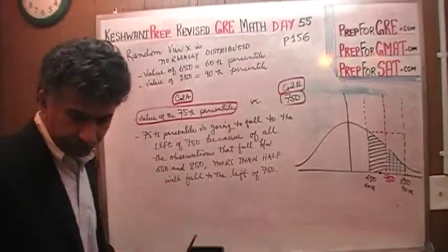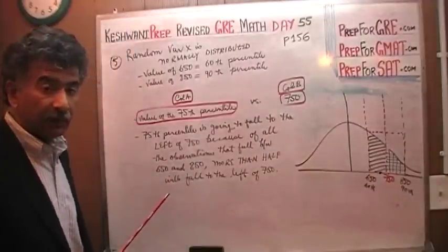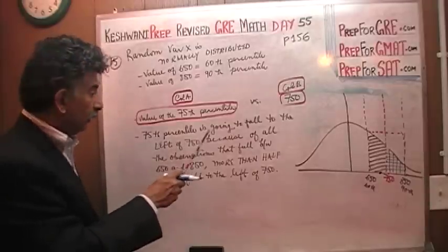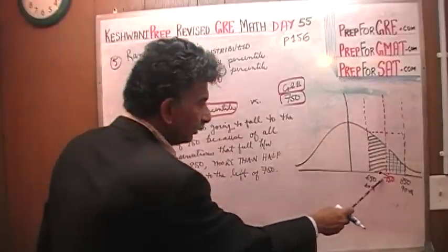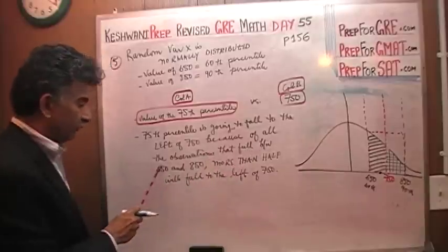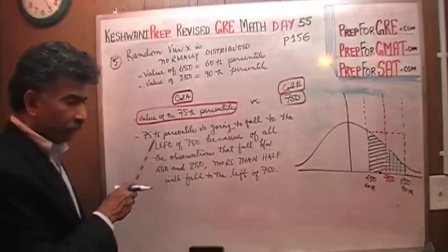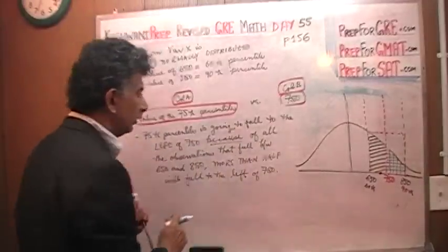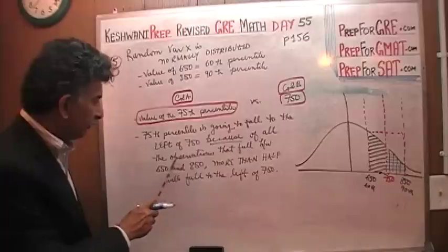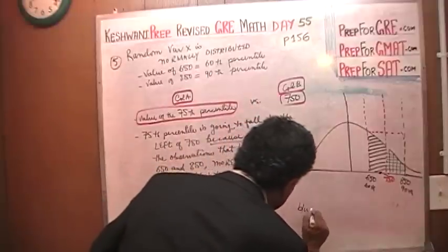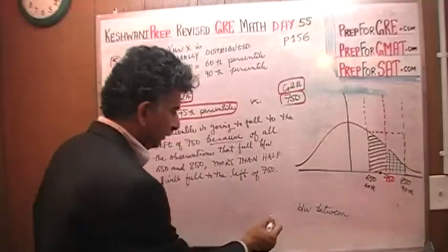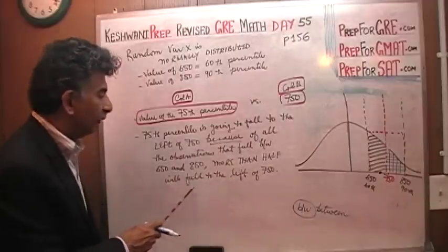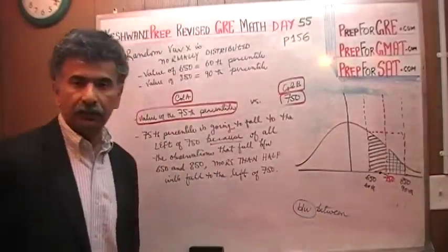Let me finish reading what I have already written on the blackboard. The 75th percentile is going to fall to the left of 750 because of all the observations that fall between 650 and 750, more than half will fall to the left of 750. That's all it is.